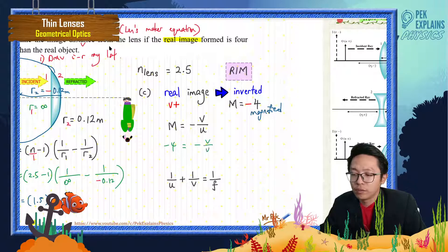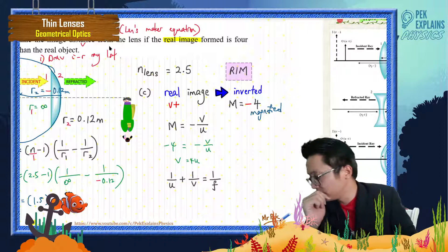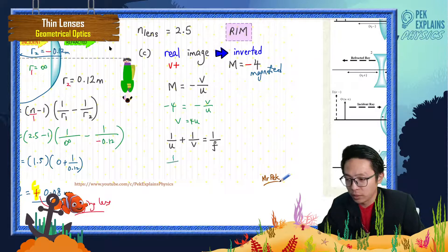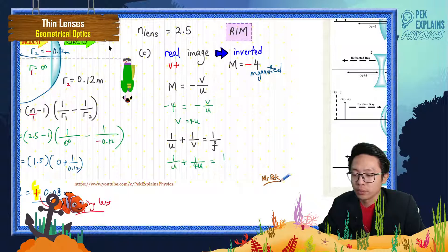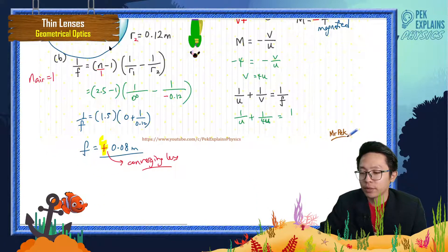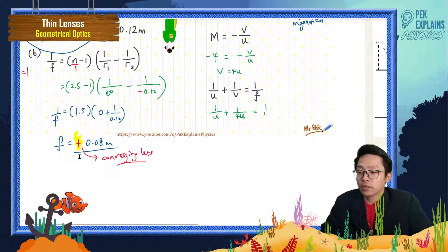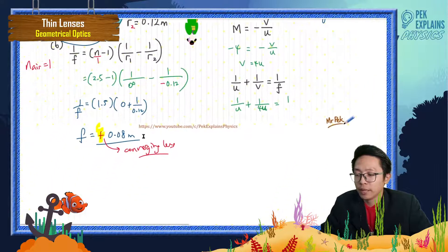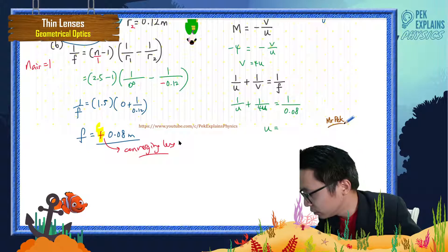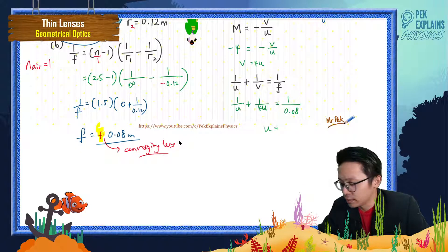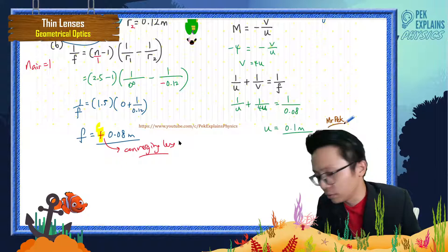Magnification m = −v/u = −4, so negative divided by negative gives positive: v = 4u. Substituting into the thin lens equation, one over u plus one over 4u equals one over f, where f = 0.08 m. Solving gives u = 0.1 m.